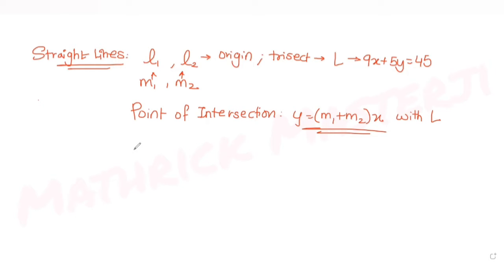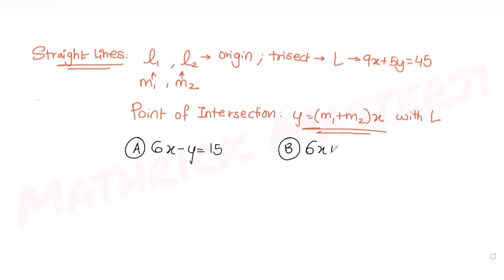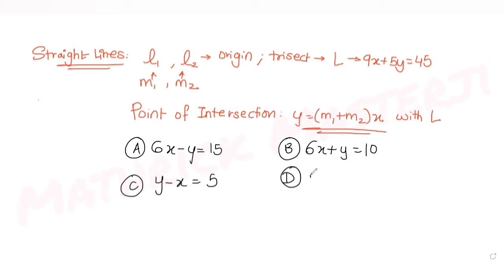The answer choices are: (A) 6x - y = 15, (B) 6x + y = 10, (C) y - x = 5, and (D) y - 2x = 5. We need to figure out which one is correct.